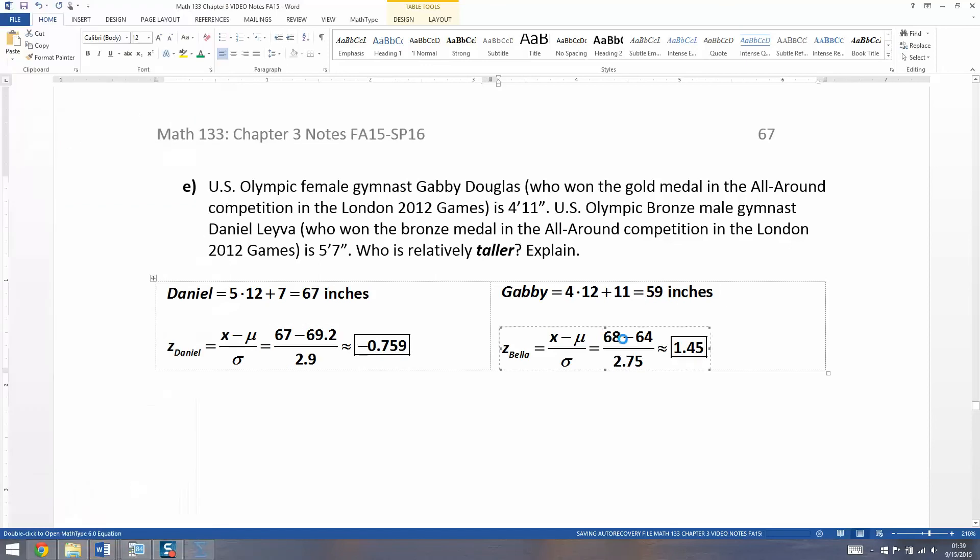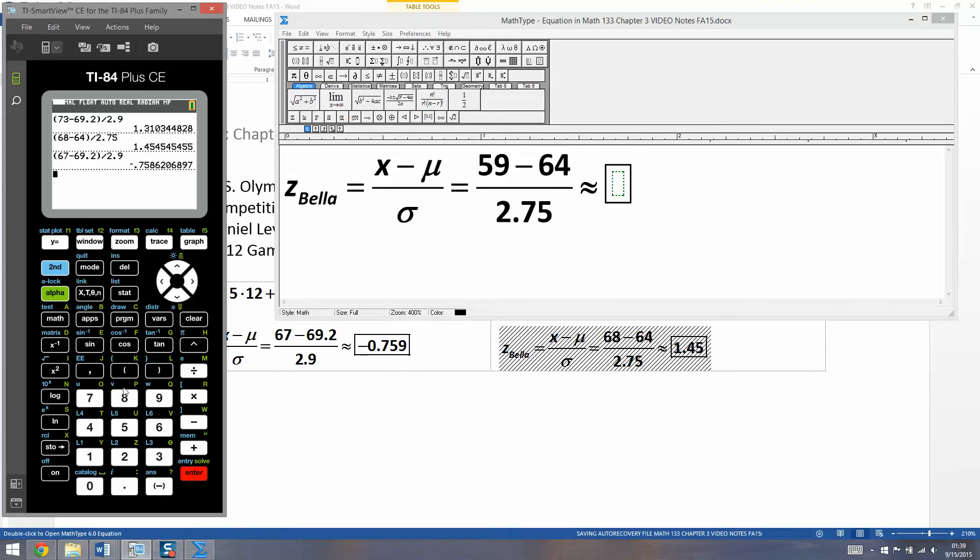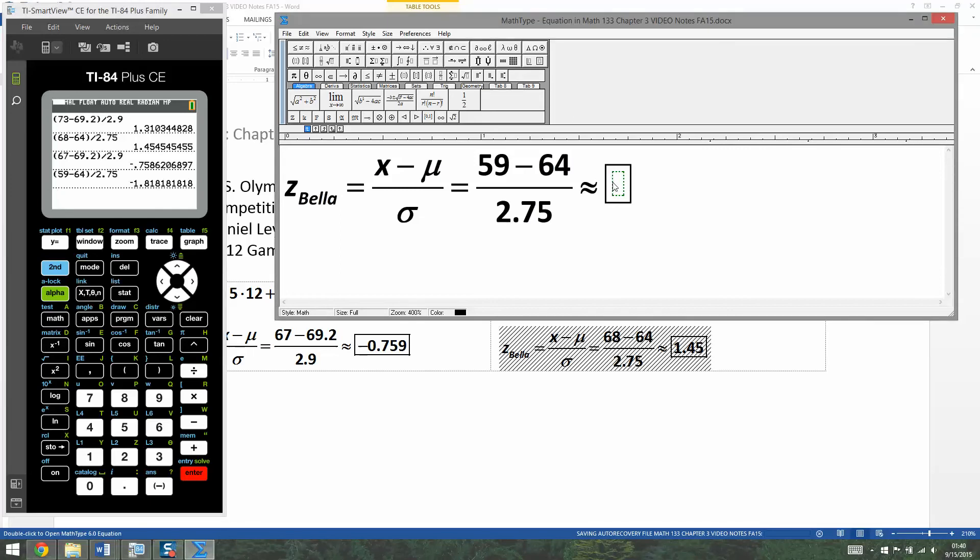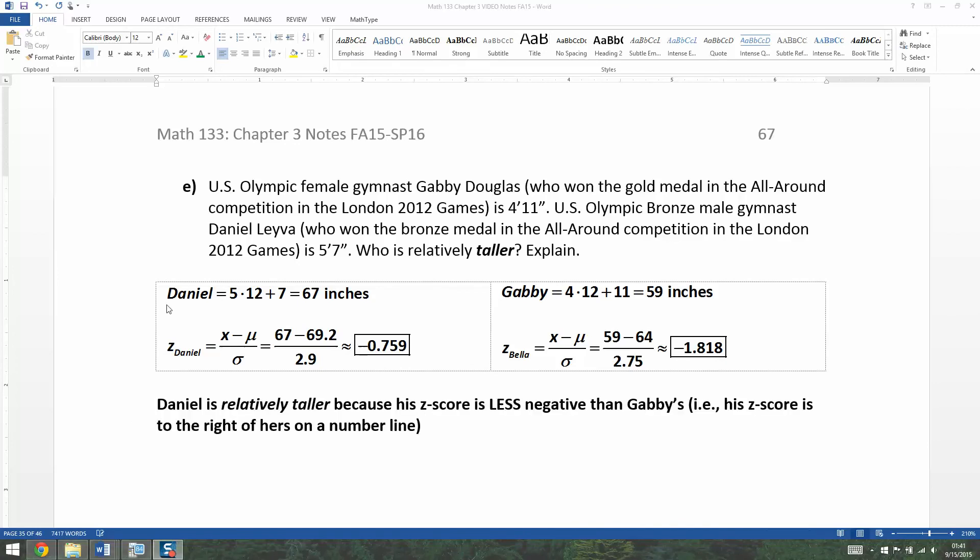Now we want to do the same for her. She's 59 inches, take away 64, divided by 2.75. Parentheses, 59 take away 64, close parentheses, divided by 2.75. She's negative 1.818 repeating. So who is relatively taller? He is. He's absolutely taller, but he's also relatively taller. It's because he's less negative than her. His Z-score is above hers, to the right of hers on the number line.